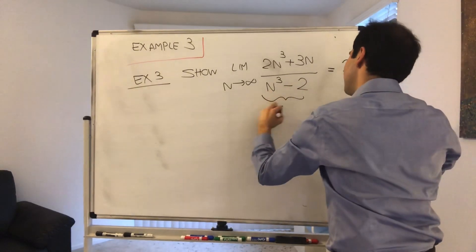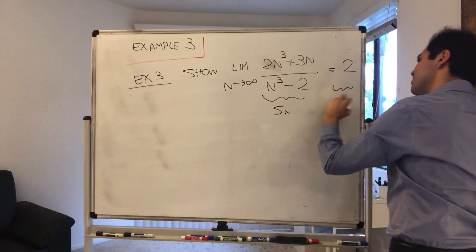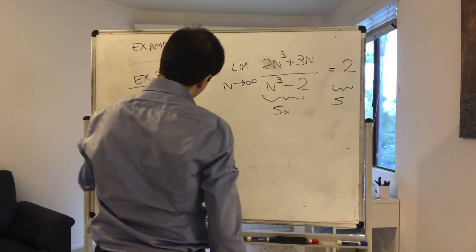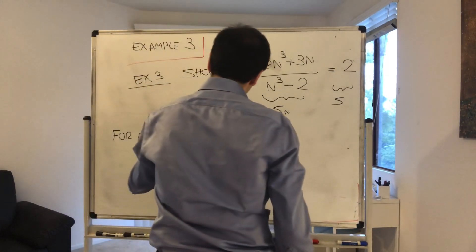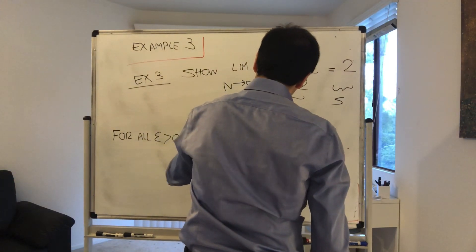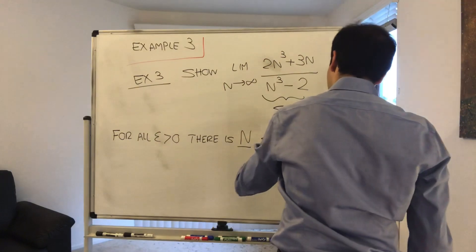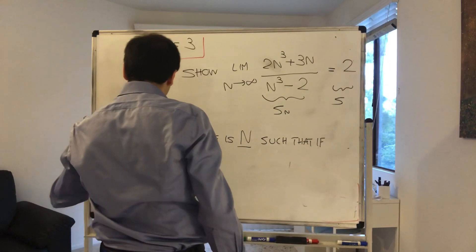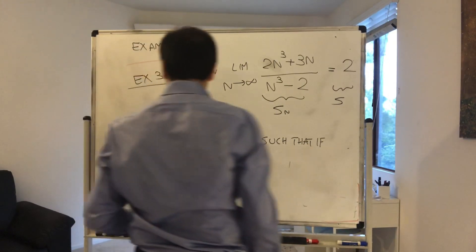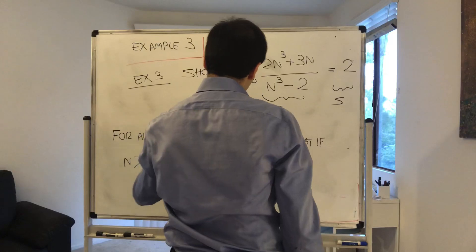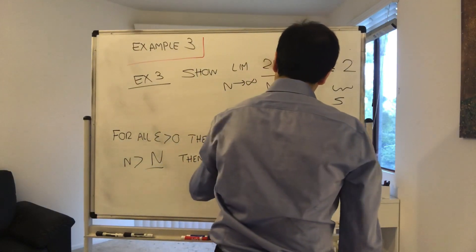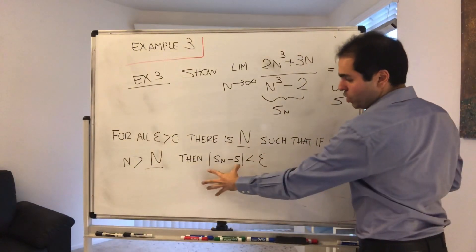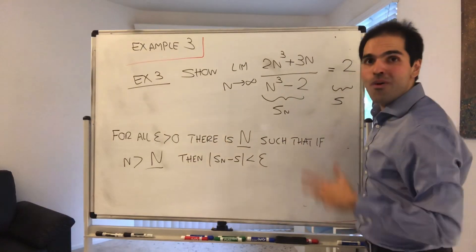This is Sn and this is S. What do we want to show? We want to show that for all epsilon, there is some threshold capital N, such that if you're beyond that threshold — if n is greater than capital N — then the difference between your sequence and your limit is less than epsilon. We want to take this equation and solve for n.